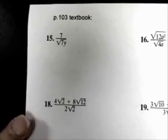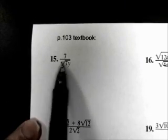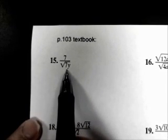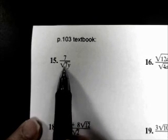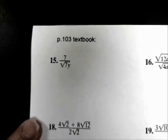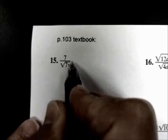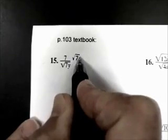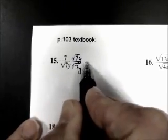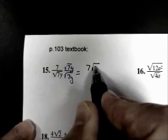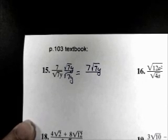Number 15. This is 7 divided by the square root of 7y. We cannot divide a radical into a whole number, and we cannot leave a radical as a denominator. So we have to rationalize this denominator. We need to bring the denominator up to a perfect square so that we can take its square root. So we'll multiply by 1 in the form of square root of 7y over square root of 7y.